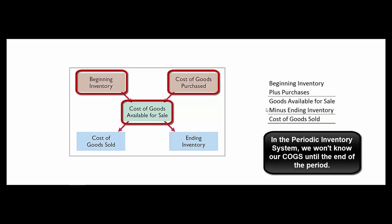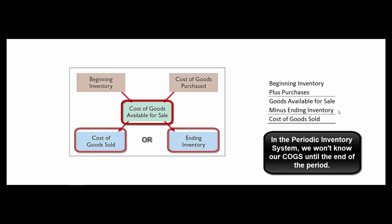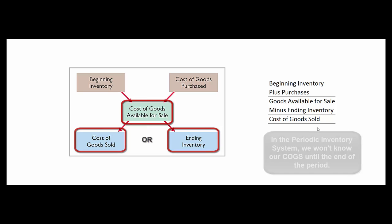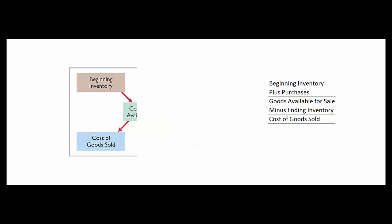We take a physical inventory so we know what's left, and that tells us what our cost of goods sold must be. Goods available for sale minus ending inventory gives us cost of goods sold.